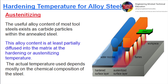Austenitizing. The useful alloy content of most tool steels exists as carbide particles within the annealed steel. This alloy content is at least partially diffused into the matrix at the hardening or austenitizing temperature. The actual temperature used depends mostly on the chemical composition of the steel.